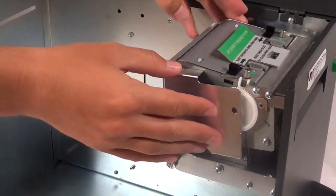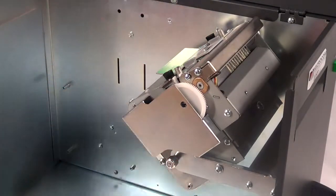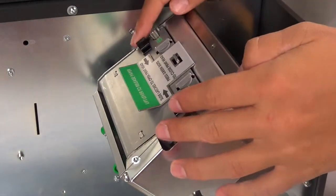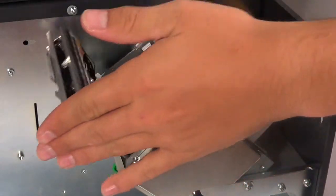Locate and unscrew the thumb screw on the side of the printer and tilt back. Open the printhead assembly by pinching the latches inward.